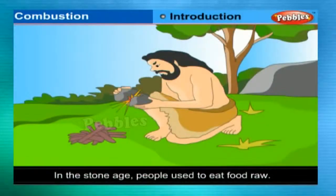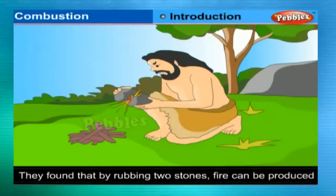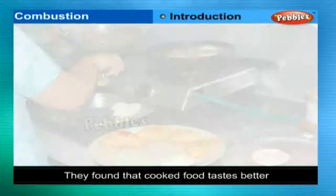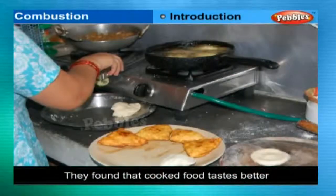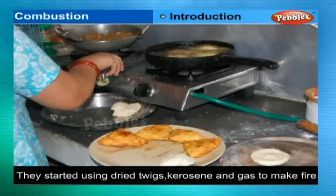In the Stone Age, people never knew the use of fire. They used to eat raw food. It was by accident they found that by rubbing two stones, fire can be produced. They found that cooked food tastes better. They then used coal, kerosene, and gas to make fire.